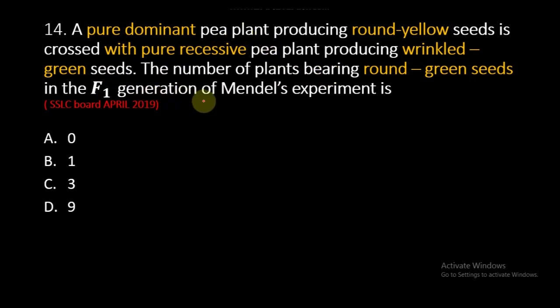Question number 14: A pure dominant pea plant producing round yellow seeds is crossed with a pure recessive pea plant producing wrinkled green seeds. The number of plants bearing round green seeds in the F1 generation of Mendel's experiment is?